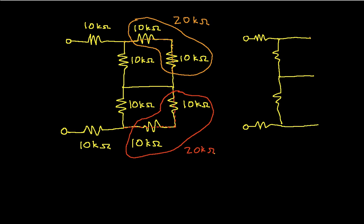Okay, so we have our first 20k ohm equivalent resistor and our second equivalent 20k ohm resistor. And all the other resistors are still 10k.